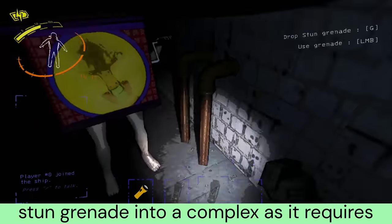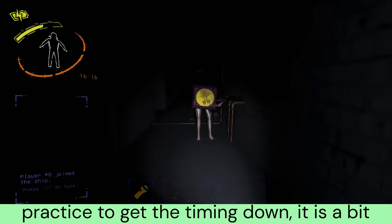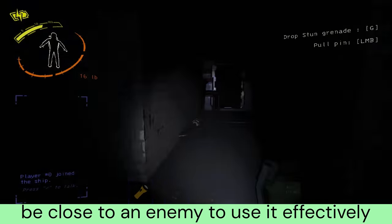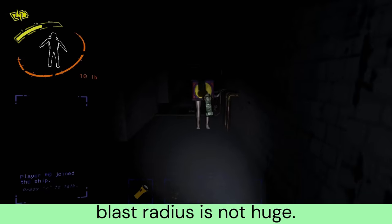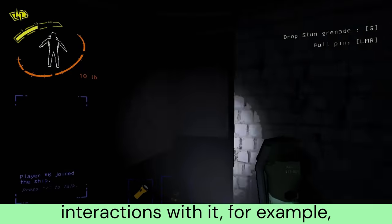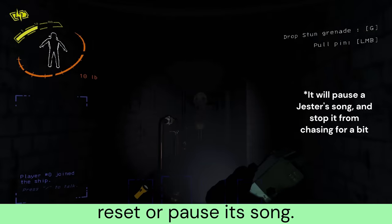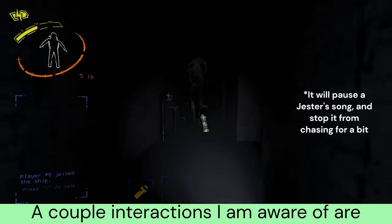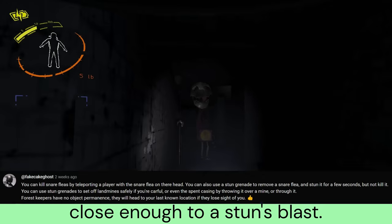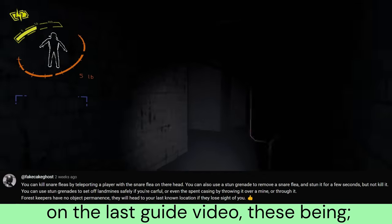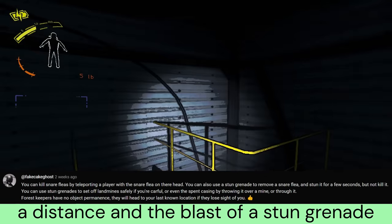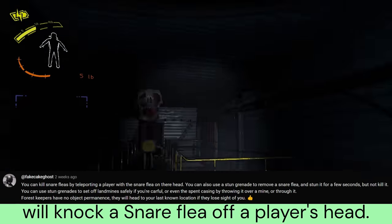I typically don't bring the stun grenade into a complex, as it requires practice to get the timing down, it is a bit pricey for a single use item, and you have to be close to an enemy to use it effectively. A couple interactions I am aware of are the fact that Forest Keepers lifting a player into their mouth will drop them if they are close enough to a stun's blast, and the blast of a stun grenade will knock a snare flea off a player's head.